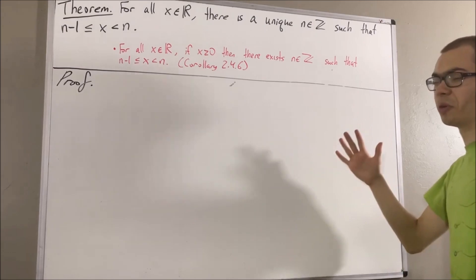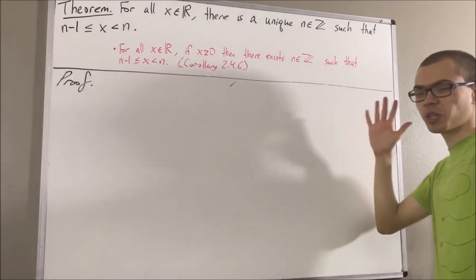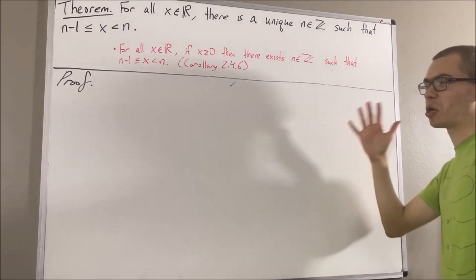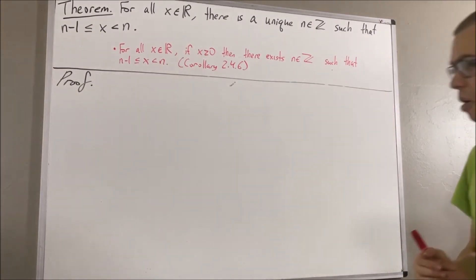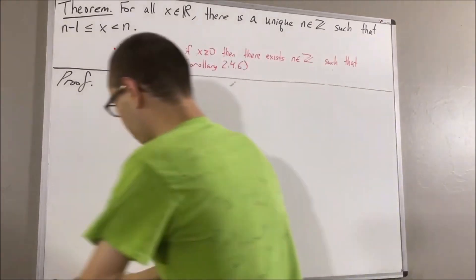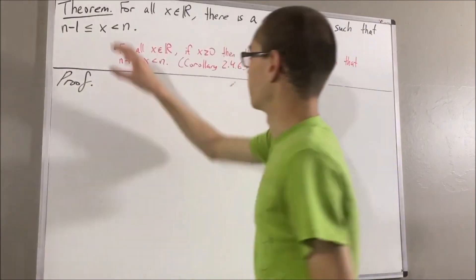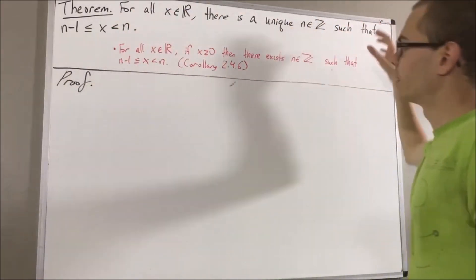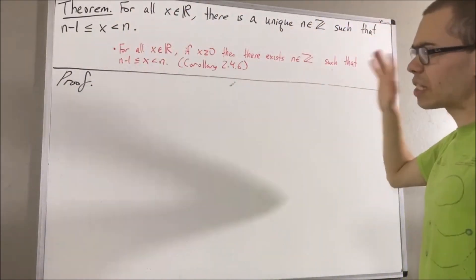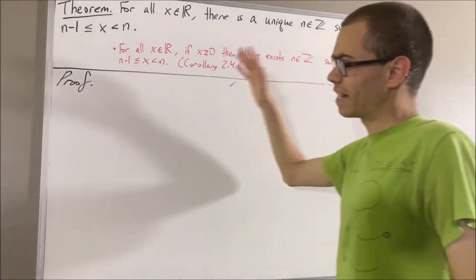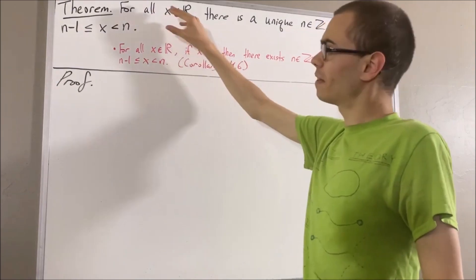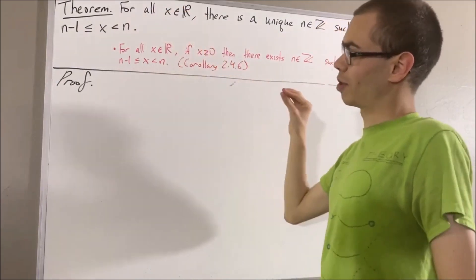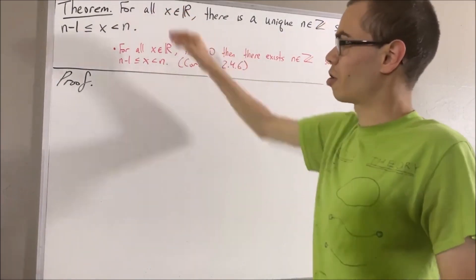The book is Intro to Real Analysis by Bartle and Sherbert, 4th edition. Okay, so now let's get into proving the theorem. And since we're trying to prove a statement about every real number, give me an arbitrary real number. I'll call it x.